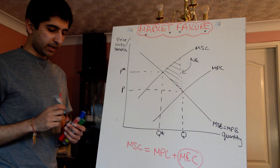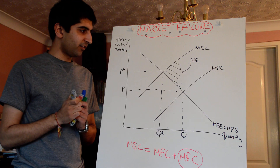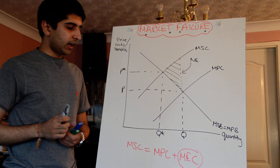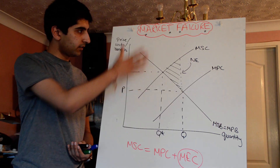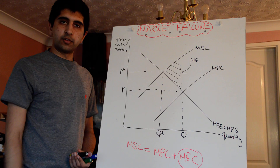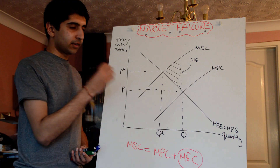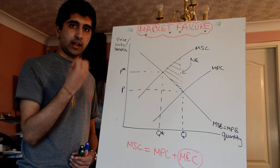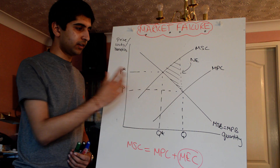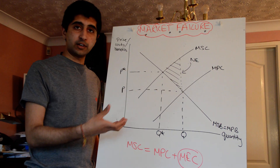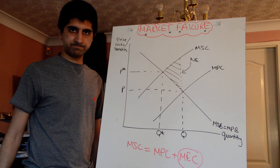So that's the basics of environmental market failure. The key things were the three causes on the previous board, and the fact that resource depletion and resource degradation are both negative externalities — therefore there is a rationale for government intervention.